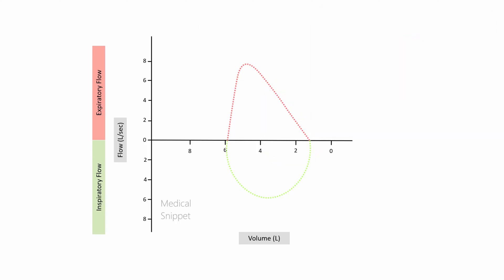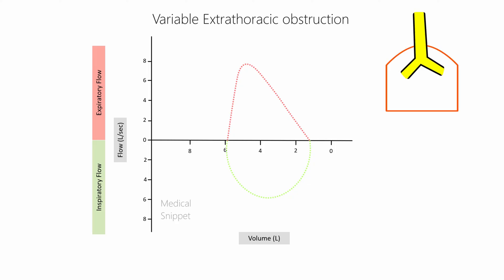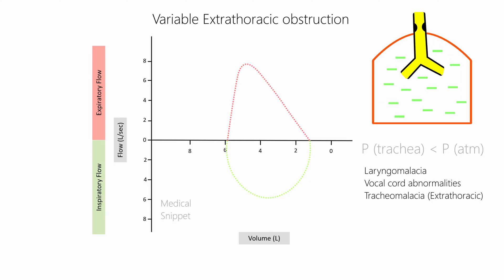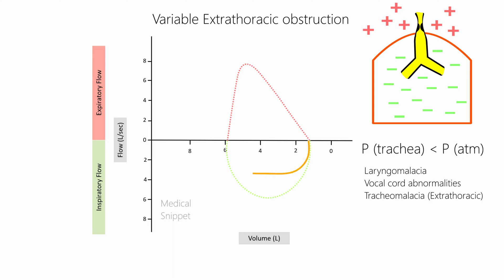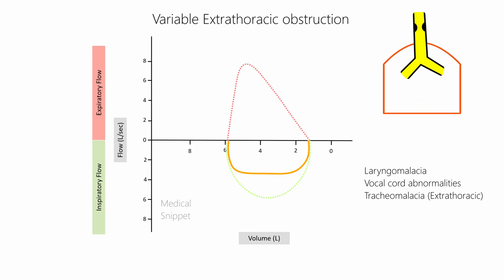For variable extra-thoracic obstruction — such as laryngomalacia, vocal cord abnormalities, and tracheomalacia of the extra-thoracic trachea — during inspiration, negative intraluminal pressure combined with higher atmospheric extra-luminal pressure causes airway narrowing, decreasing inspiratory flow rate. During expiration, intraluminal pressure exceeds extra-luminal atmospheric pressure, so the airway expands and expiratory flow rate is unaffected.